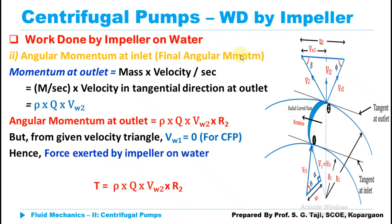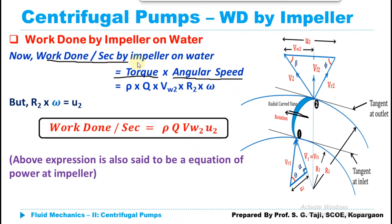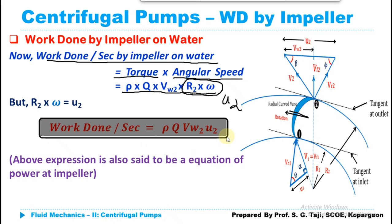Moving to the computation of work done per second: work done per second equals torque multiplied by angular speed Omega. So work done per second = ρQ × Vw2 × R2 × Omega. Since R2 × Omega = U2, this simplifies to work done per second = ρQ × Vw2 × U2. This expression is also called the equation of power at the impeller.